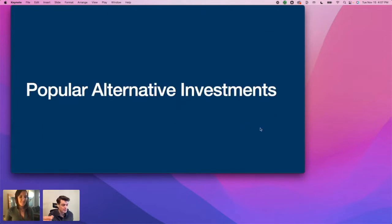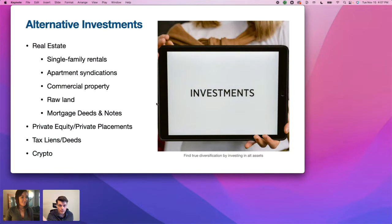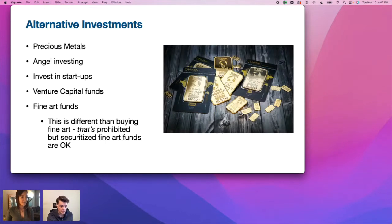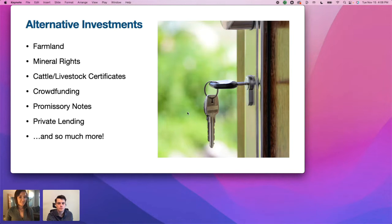The most popular investments we see within Solo 401ks include: real estate — single family rentals, apartment syndications, commercial properties, raw land, mortgage deeds and notes; private equity, private placements, tax liens and deeds, cryptocurrencies, precious metals, angel investing, startup investing, venture capital, fine art funds (note: direct fine art is prohibited but securitized fine art funds are okay), farmland, mineral rights, cattle and livestock certificates, crowdfunding, promissory notes, and private lending.